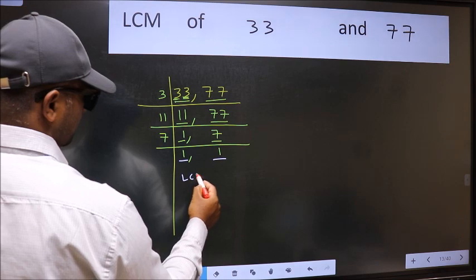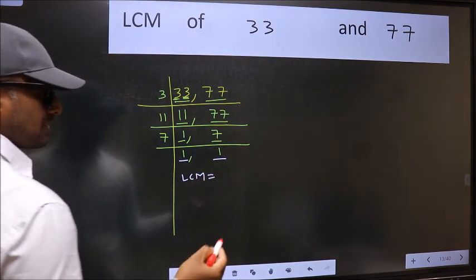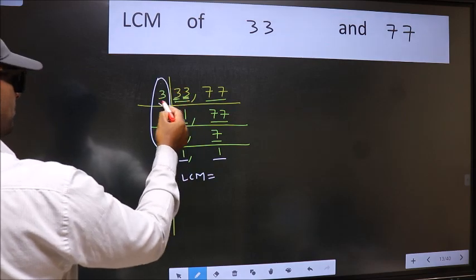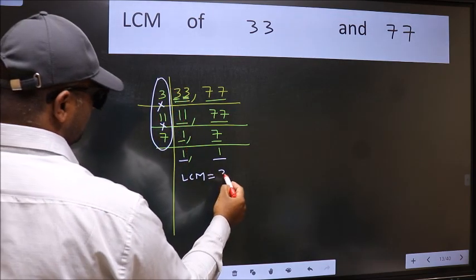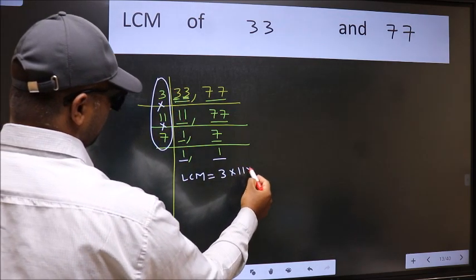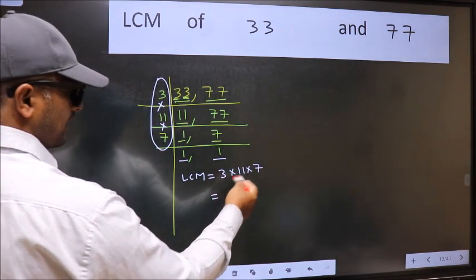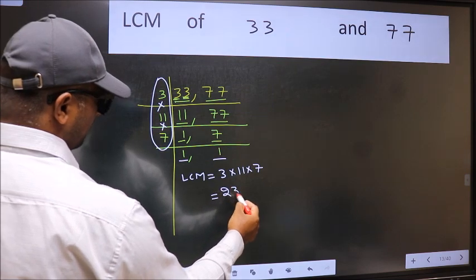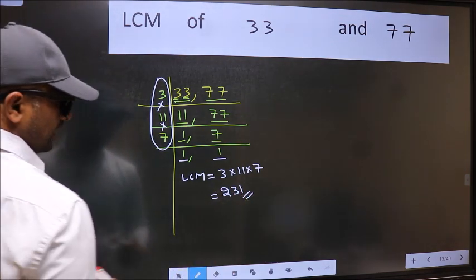So our LCM is the product of these numbers. That is 3 into 11 into 7. When we multiply these numbers, we get 231 is our LCM.